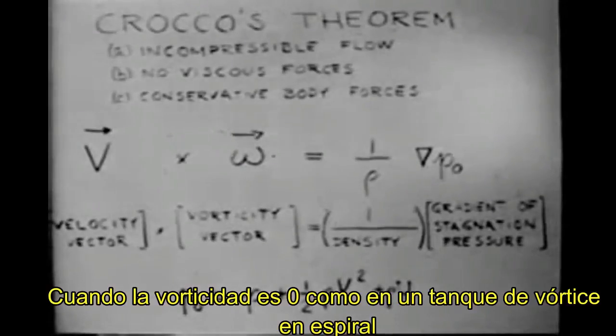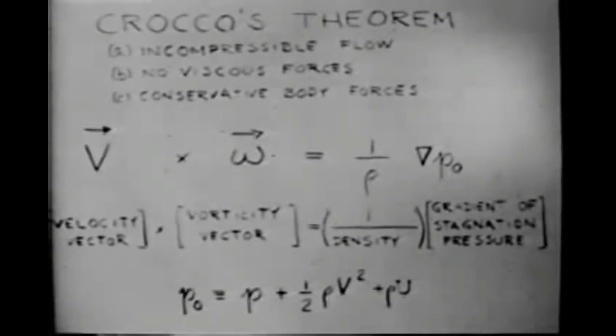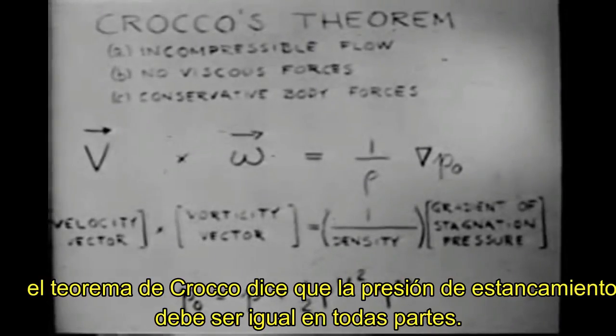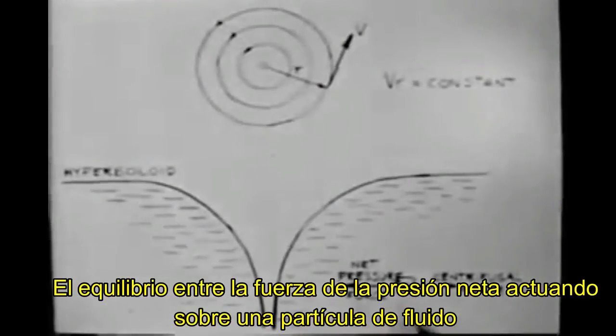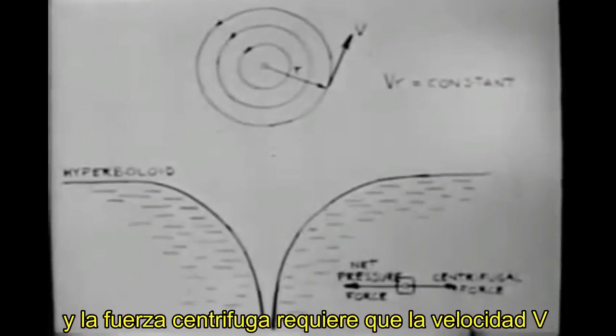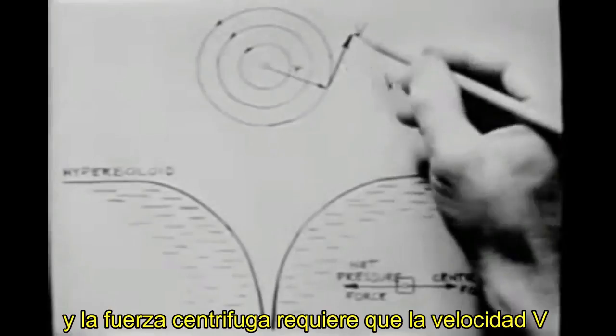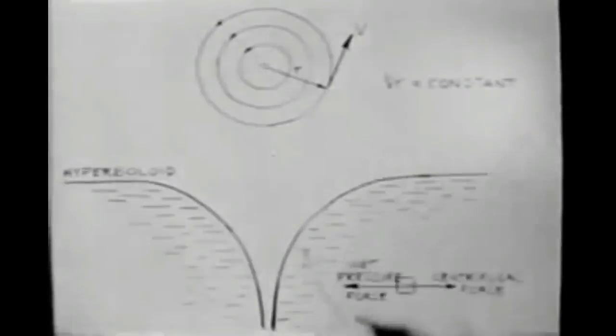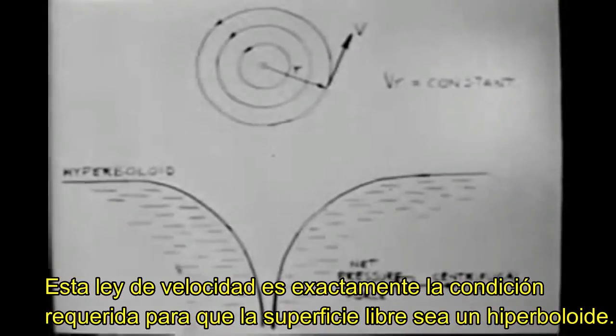When the vorticity is zero, as in the spiral vortex tank, Crocco's theorem says that the stagnation pressure must be everywhere the same. The spiral of the vortex is so tight that it is not much of a liberty to think of the streamlines as being concentric circles. The equilibrium between the net pressure force acting on a fluid particle and the centrifugal force requires that the velocity v vary inversely with the radius r. If the total pressure is to be constant throughout, this velocity law is exactly the condition required for the free surface to be a hyperboloid.